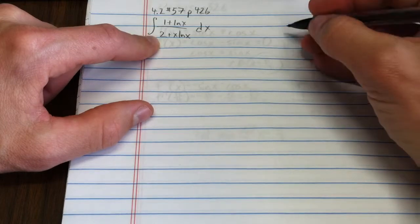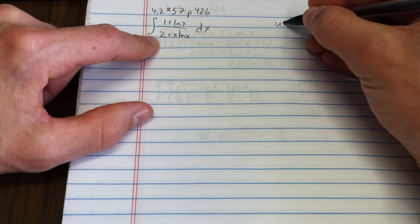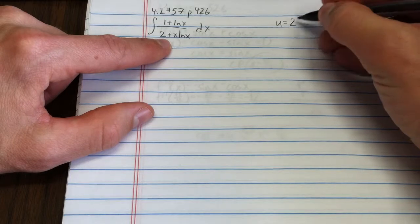My next try might be the denominator. Well, if my u was the denominator, what's going to happen here?